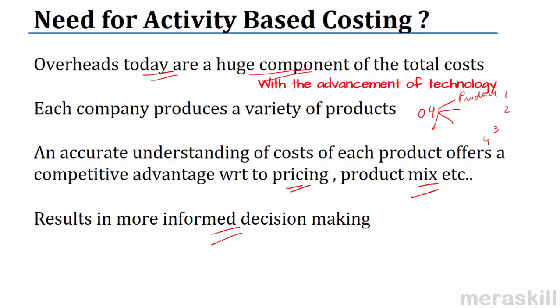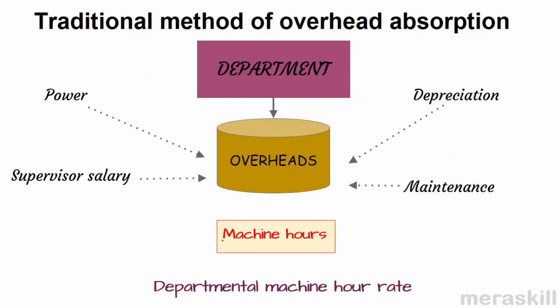So, activity-based costing is nothing but a system of costing which helps us to apportion overheads — allocate the overheads by seeing how much the cost objects consume the activities which actually consume the resources. This is how traditionally overhead absorption was being made.